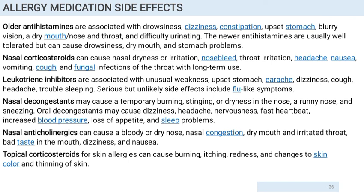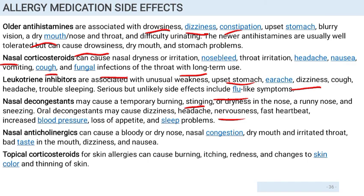Side effects of allergic medications: older antihistamines are associated with drowsiness, dizziness, constipation, upset stomach, blurry vision, dry mouth, nose and throat, and difficulty urinating. Newer antihistamines are usually well tolerated. Leukotriene inhibitors are associated with unusual weakness, upset stomach, earache, dizziness, cough, headache, and trouble sleeping; serious but unlikely side effects include flu-like symptoms. Nasal decongestants may cause temporary burning, stinging, or dryness in the nose, running nose, and sneezing. Oral decongestants may cause dizziness, headache, nervousness, fast heartbeat, increased blood pressure, loss of appetite, and sleep problems.